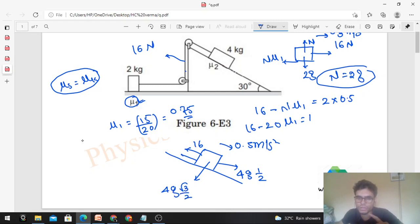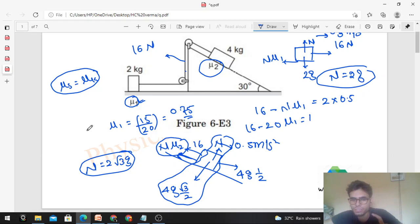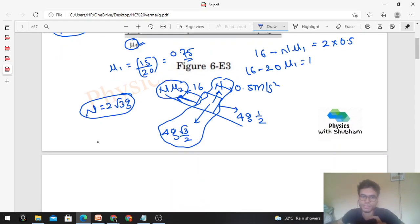Which force will be there? mg sin theta, so m is 4, g sin theta, sin 30 is 1 by 2. In this direction perpendicular to the inclined plane, mg cos theta - m is 4, g is g into cos 30 which is root 3 by 2. And normal will be perpendicular to the inclined surface. You can see normal will be 2 root 3 g because perpendicular to the inclined plane we can balance the force. There is no motion perpendicular to the inclined plane.